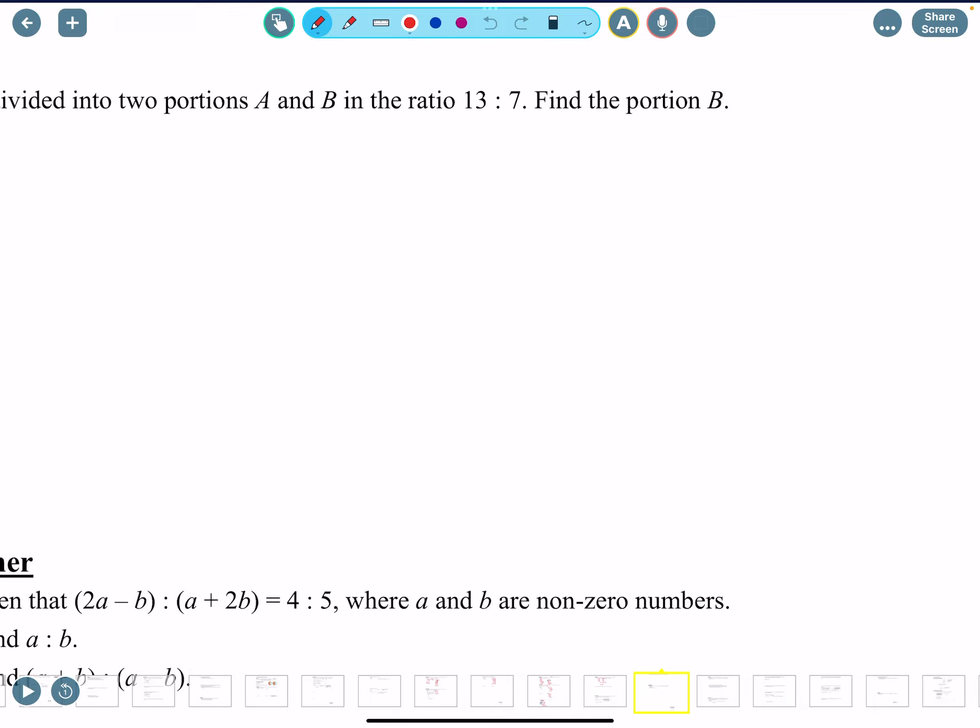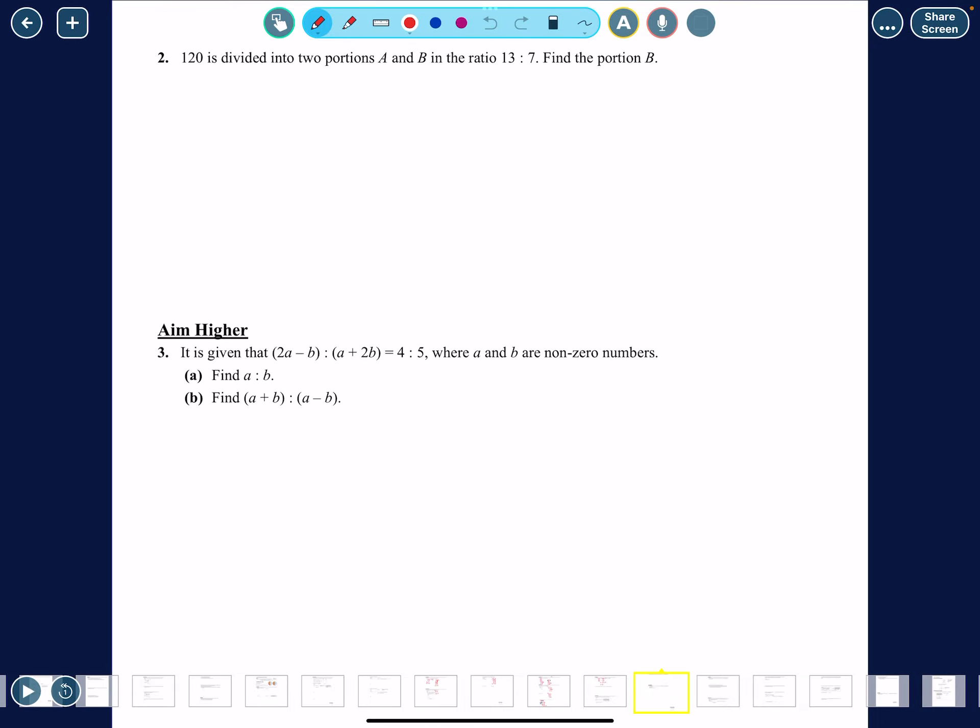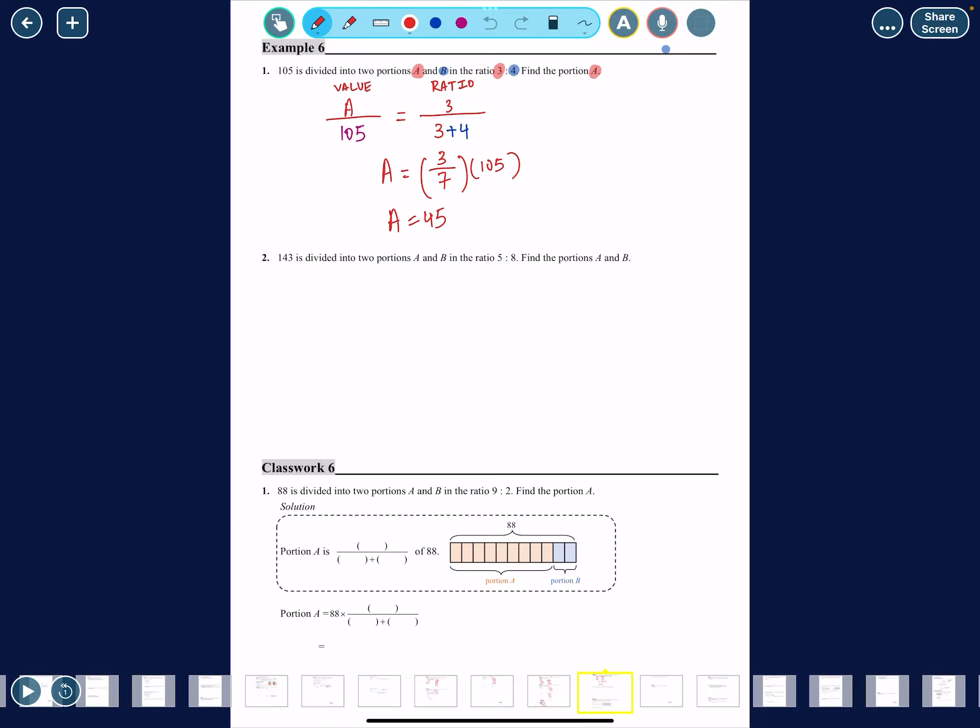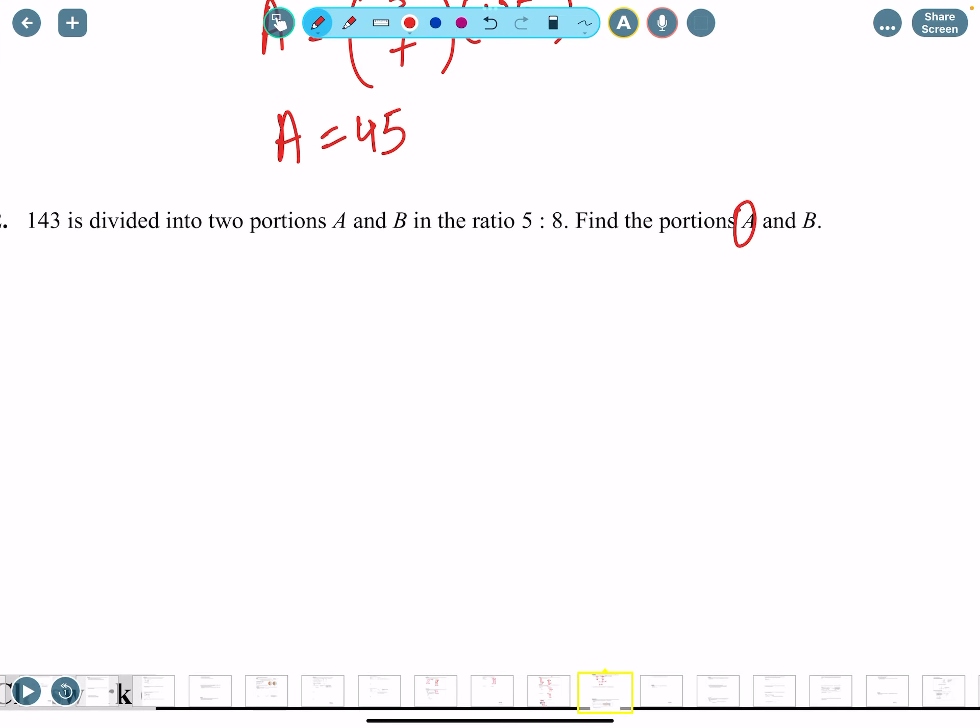That's one type of question. I think it's more or less the same. Be careful with this one - this one's asking for two things, A and B. So let's say I want to find B this time. Another example: B is in blue, A in red.